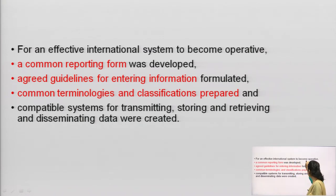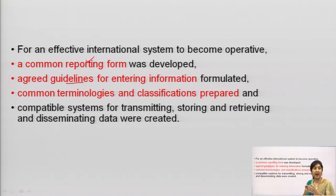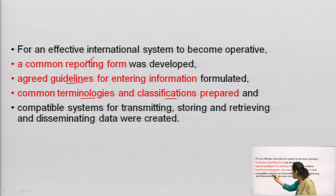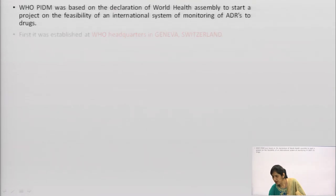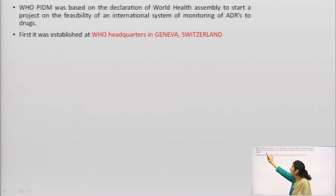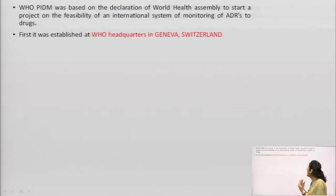For an effective international system to become operative, a common reporting form was developed with the help of CIOMS, and agreed guidelines were established for entering the information. Common terminologies and classifications were prepared, and a compatible system was prepared for transmitting, storing, retrieving, and disseminating data. All these were created for an effective international system to operate.